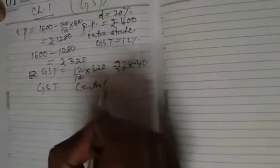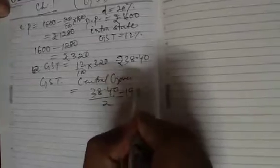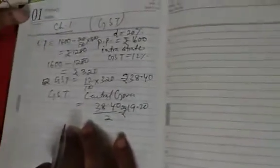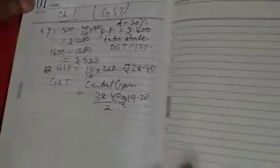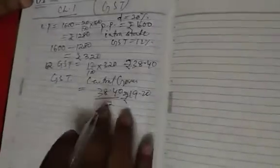So, GST given to central government. First question we have, central government, that is equal to 38.40 by 2, which is 19.20. Second question we have, that GST received by the central government. For that first we will find out what is the amount of GST total received. Second bit. This is your first bit.